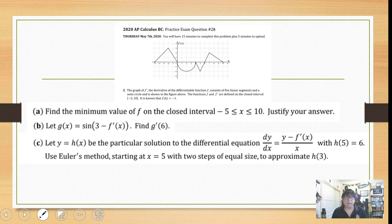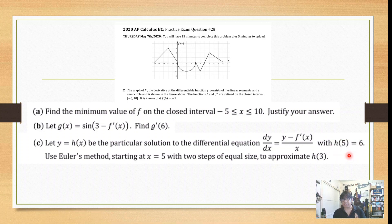Five parts of this problem. Part A: find the minimum value of f on the closed interval from negative 5 to 10, justify your answer. Part B: let g(x) = sine of (3 minus f prime of x), find g prime of 6. Part C: let h(x) be the particular solution to the differential equation dy/dx = (y minus f prime of x) / x, with h(5) = 6. Use Euler's method starting at x = 5, with two steps of equal size to approximate h(3). Right now I'm getting my Euler's method chart ready — hopefully you learned how to do this in a chart, as that is the best way to organize your work.